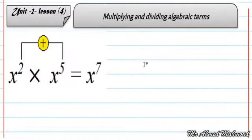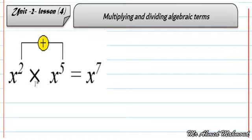In the sixth primary, we studied how to multiply two numbers with powers. If we have x to the power of 2 and x to the power of 5, and in between there is a multiplication sign, then we are going to add the powers to get x to the power of 7.